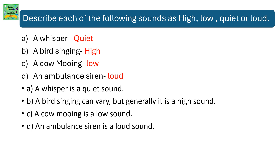Classify the following sounds as high, low, quiet or loud. A whisper — it's quiet. A bird singing — high. A cow mooing — it's low. An ambulance siren — it's loud. A whisper is a quiet sound. A bird singing is generally a high sound. A cow mooing is a low sound. An ambulance siren is a loud sound.